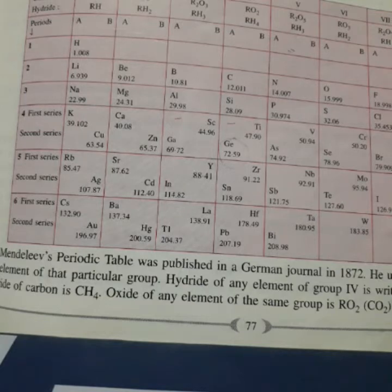Mendeleev used the formula of oxides and hydrides to group the elements together. This is very important, try to understand.